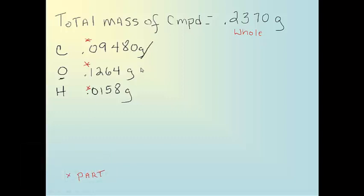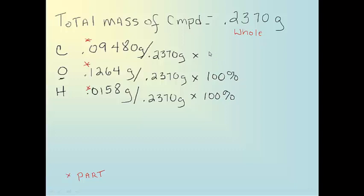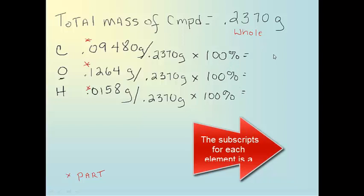So these are my parts. I am just going to divide all three by the 0.2370. And I'm just going to multiply them all by 100, and that's 100%, because this is how you do it anytime. Anytime you read the percentage of a population, anything, it's always part over whole times 100.